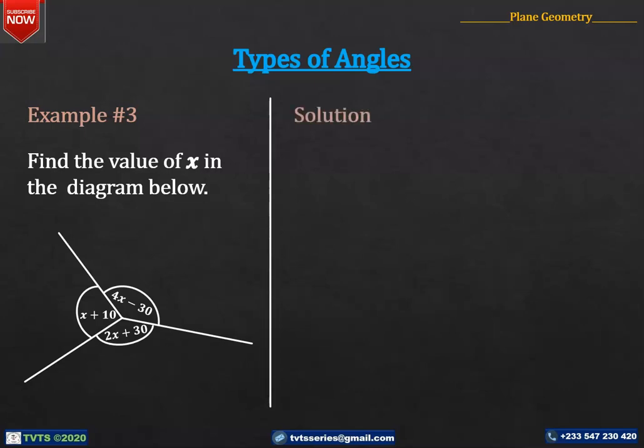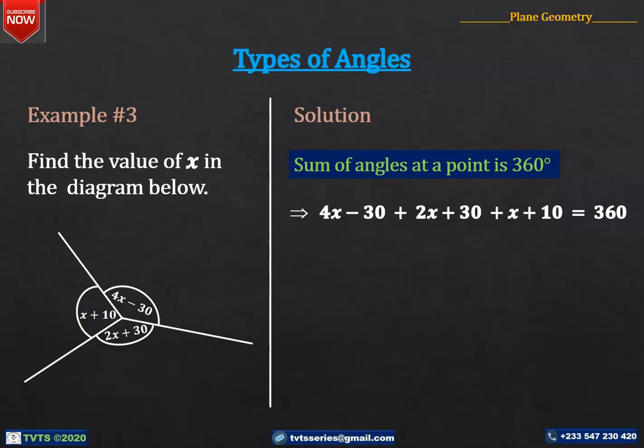Solution. The clue here is that the sum of angles at a point is 360 degrees. This implies that 4x minus 30 plus 2x plus 30 plus x plus 10 is equal to 360. 4x plus 2x plus x is 7x, and minus 30 plus 30 plus 10 is 10, which is equal to 360.